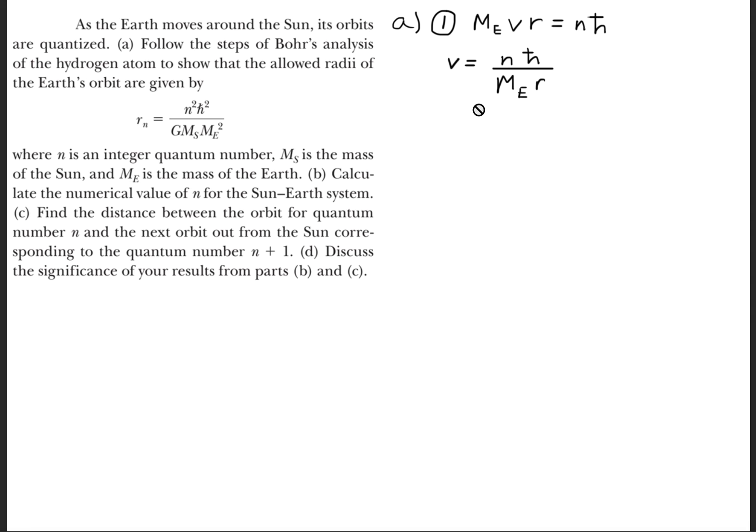We'll rearrange this equation and solve for velocity, so velocity equals n times h-bar divided by the mass of the Earth times the radius.